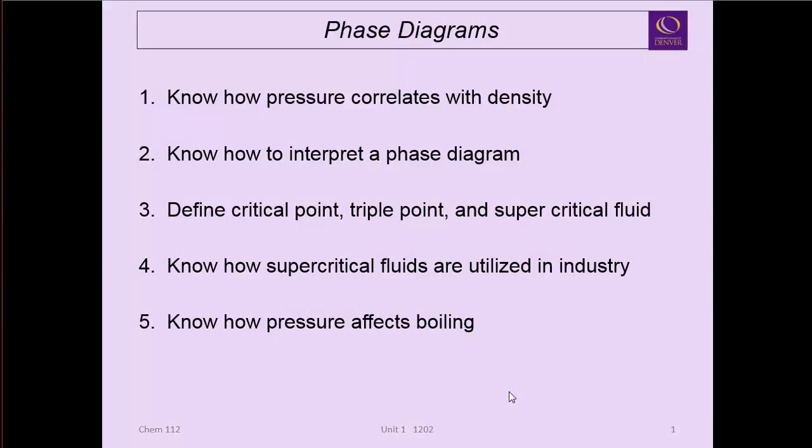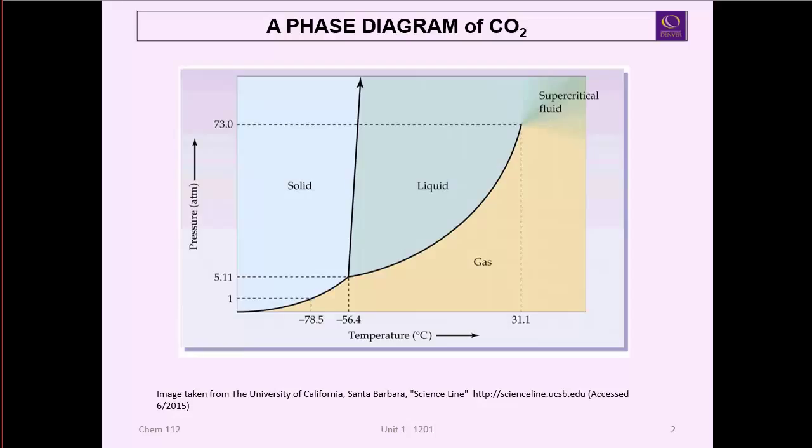So what we're going to talk about today is phase diagrams, and here's a typical phase diagram. This is the phase diagram of CO2. What you'll notice running up the y-axis is pressure - starting at the bottom it's low pressure increasing as you go up, and what runs along the x-axis is temperature. Starting at the left it's low temperature, and as you go to the right you're increasing temperature.